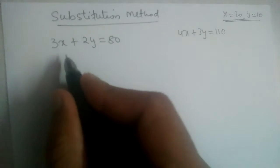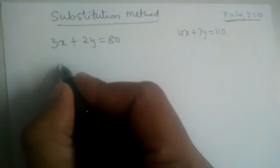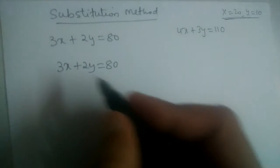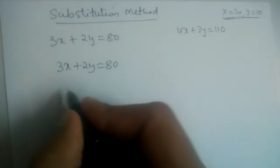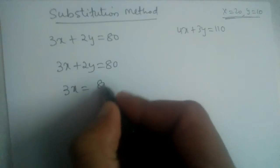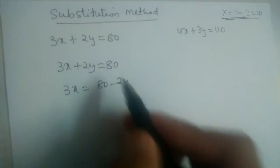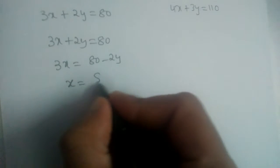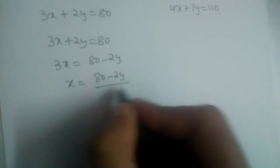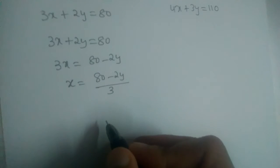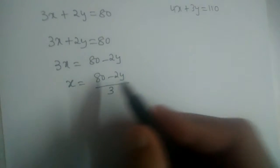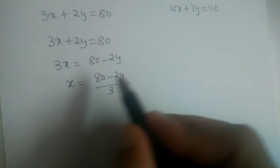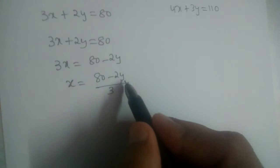Let us take the first equation: 3x + 2y = 80. We will find the value of x in terms of y. So 3x = 80 − 2y, which gives us x = (80 − 2y) / 3. We found the value of x in terms of y.